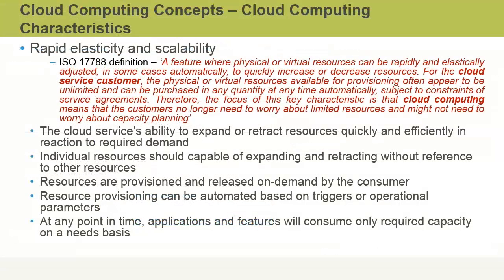Rapid elasticity and scalability is a key feature of cloud computing. This is the cloud service's ability to expand or contract as the user decides they need additional compute resources, or it could be automated. If you compare this to what we used to do previously — which would be to order hardware for computing, physically wait for it to be shipped, unbox it, set it up, install an operating system, patch it, configure it, and so on — that takes a lot longer than simply provisioning or deprovisioning resources as you need them in the cloud. Resource provisioning in the cloud can be automated based on triggers or operational parameters that users can configure, and applications will only consume required capacity on a needs basis.